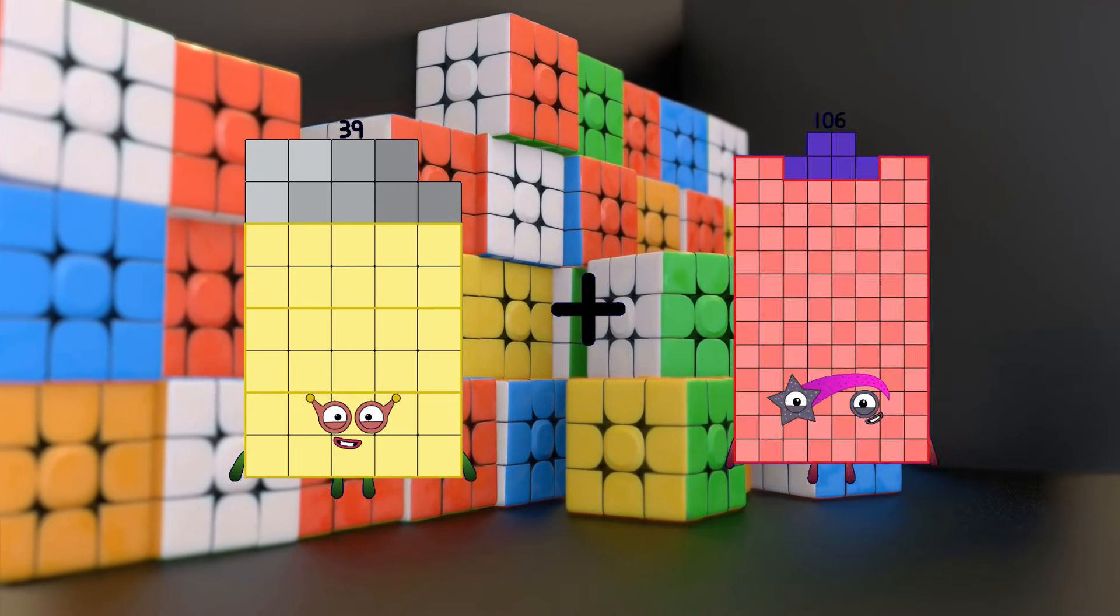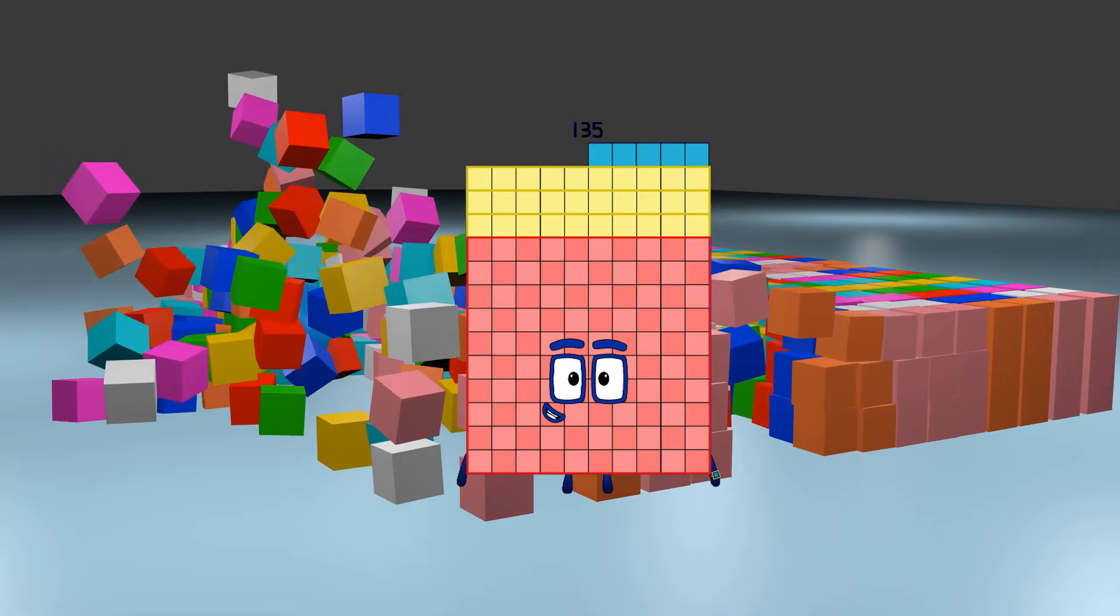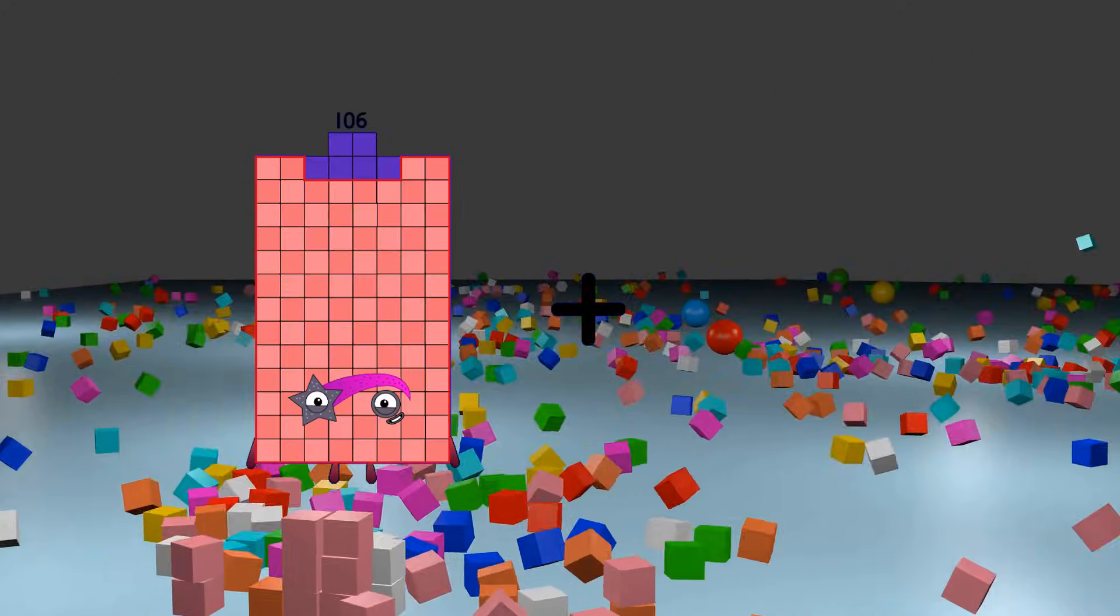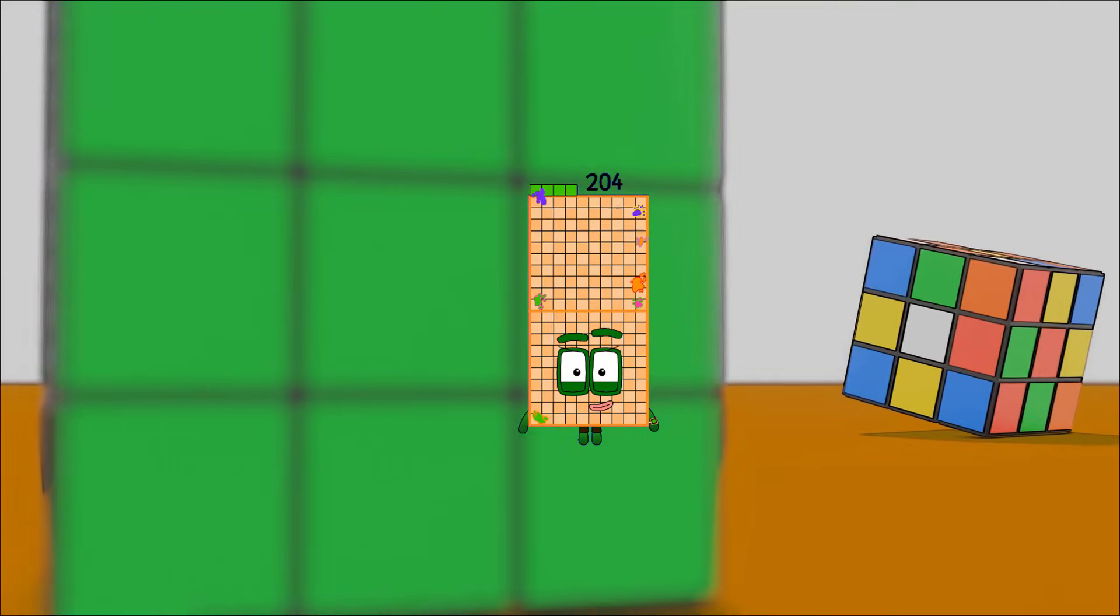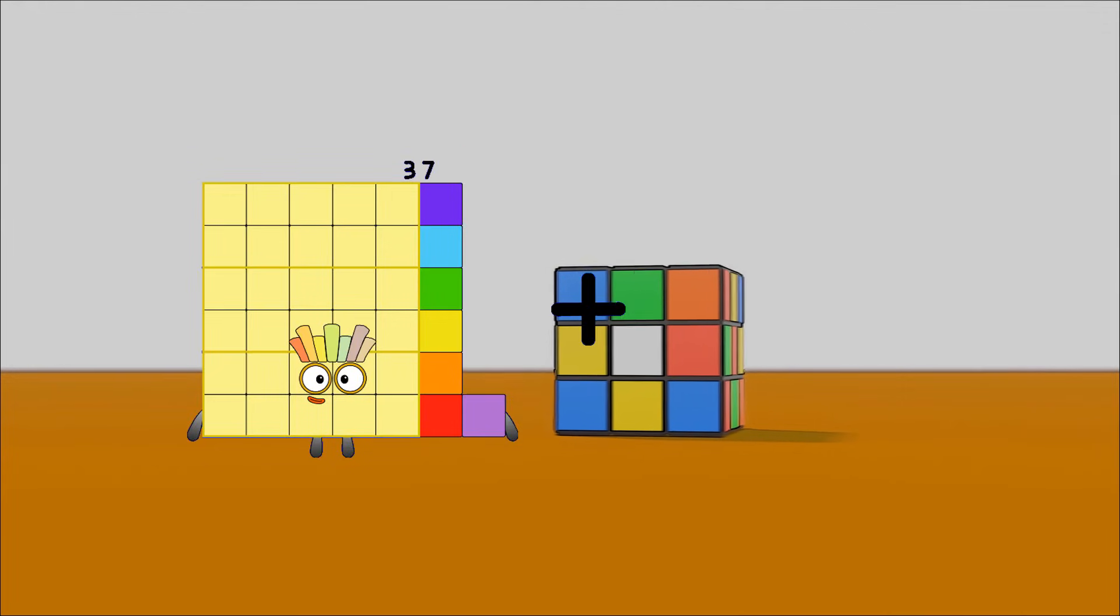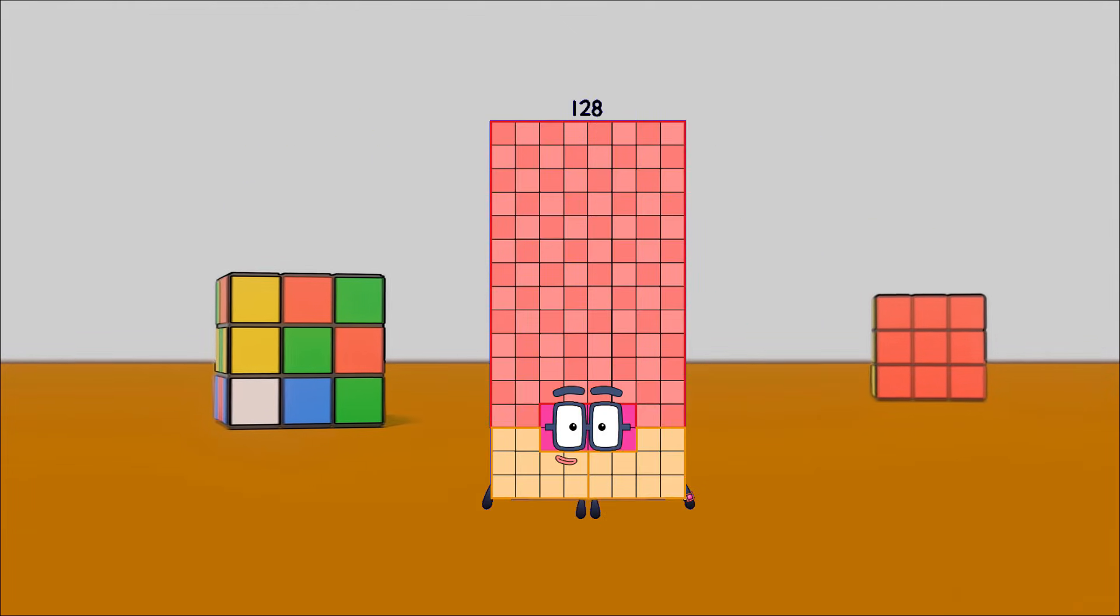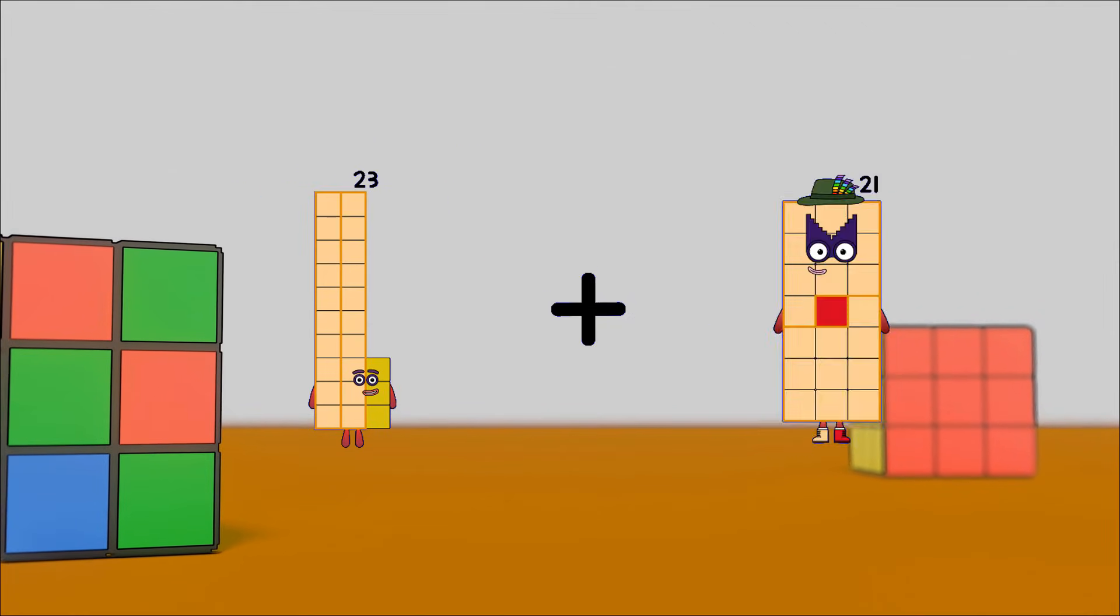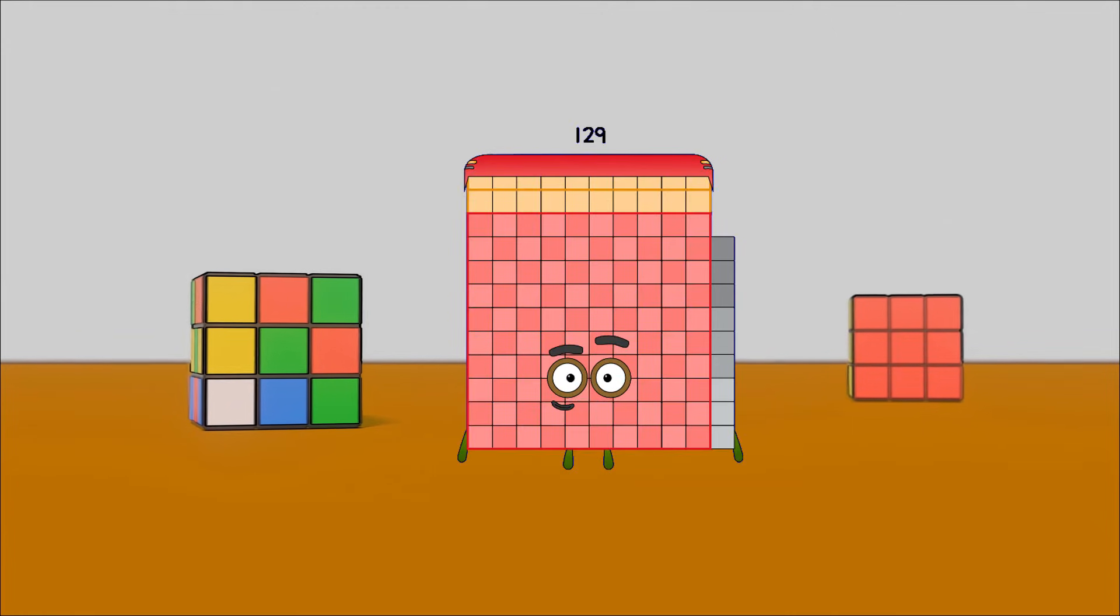39 plus 96 equals 135. 106 plus 98 equals 204. 37 plus 91 equals 128. 23 plus 106 equals 129.